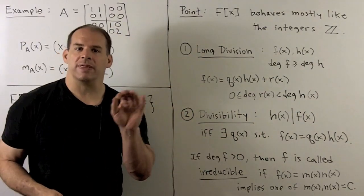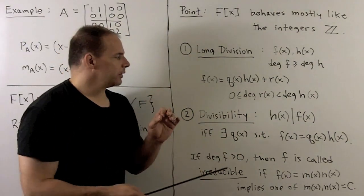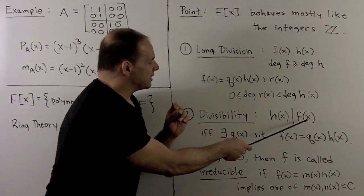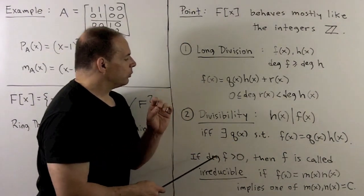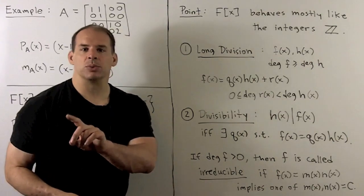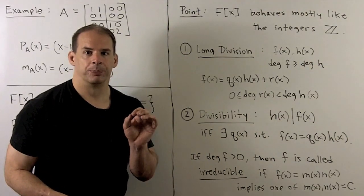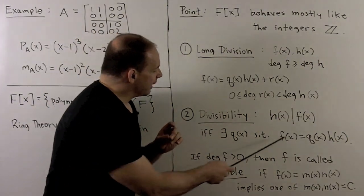With that, we can then talk about divisibility. So I would say that h divides f, if and only if we can find some polynomial Q, such that f is equal to Q times h.